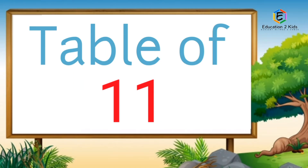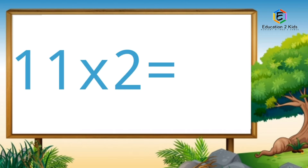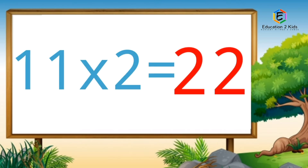Table of Eleven. Eleven ones are eleven. Eleven twos are twenty-two.